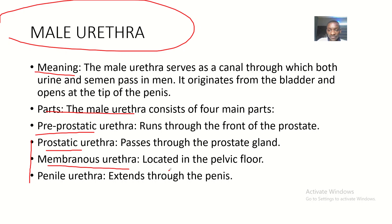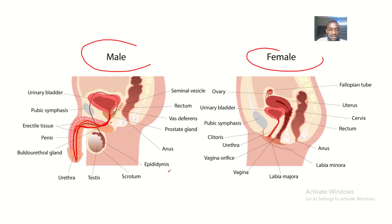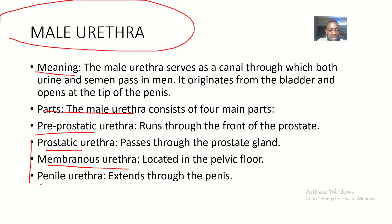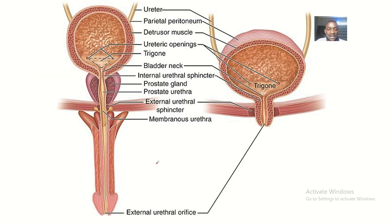The membranous urethra is located in the pelvic floor. Then the urethra inside the penis is what we call the penile urethra, which extends through the penis.